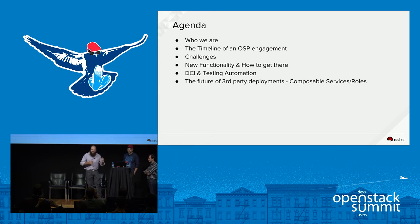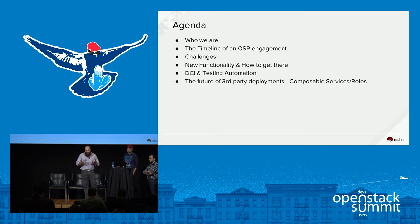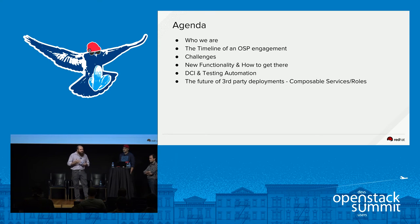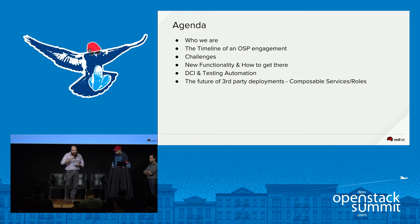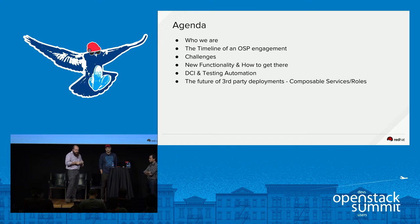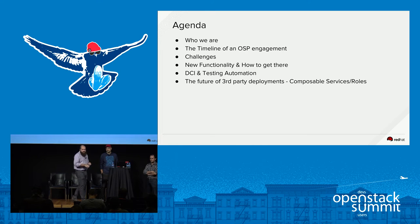Just a little bit about what we're going to talk about: who we are, the timeline of what an OSP engagement like this looks like, where we start, the many steps in between, and hopefully where we're going to be — the challenges that we bumped into, which I think is what most of you are interested in, figuring out where you're going to bump into problems, and hopefully how to solve them. There was a lot of new functionality added to OpenStack with this engagement, so we'll talk about how we got there — how we defined what new features were needed and how Red Hat was able to get them into OpenStack — creating some testing automation with DCI, and the future of third-party integration efforts with composable services and composable roles.